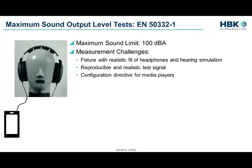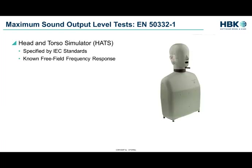EN 50332-1 establishes a maximum noise limit for personal music players equivalent to 100 dBA in a room. This is easy enough to measure with a microphone in front of a loudspeaker, but offers some challenges when it comes to evaluating exposure at the listener's ear. First, we need a test fixture which will allow a realistic fit of a headphone set and will accurately model human hearing. Secondly, we need a test signal which is reproducible and representative of audio content that individuals will be exposed to. Finally, we need a standard configuration for media players to test for the worst possible case scenario.